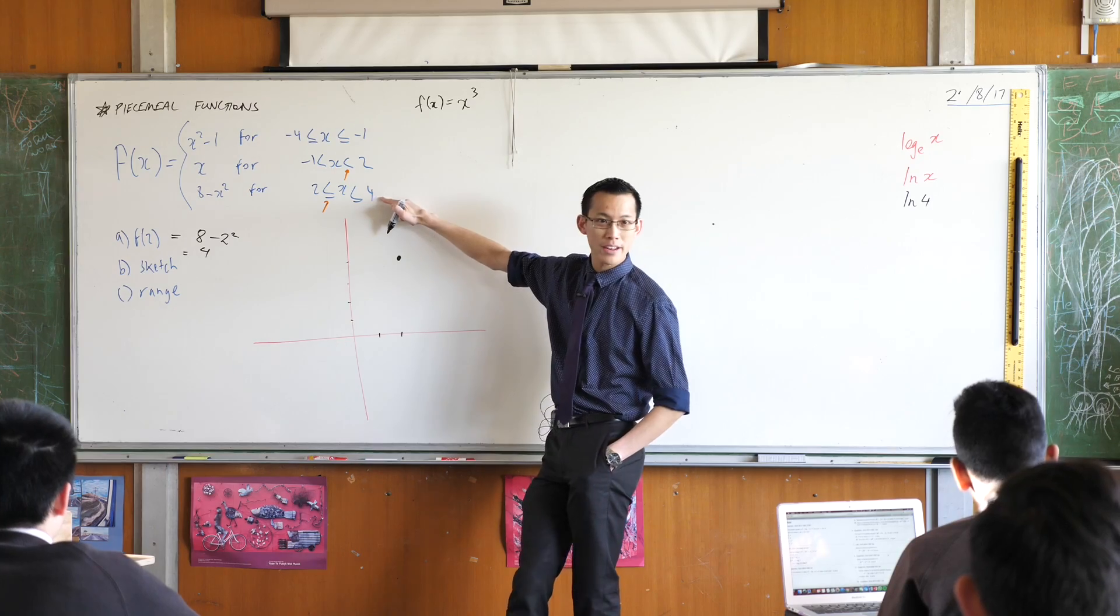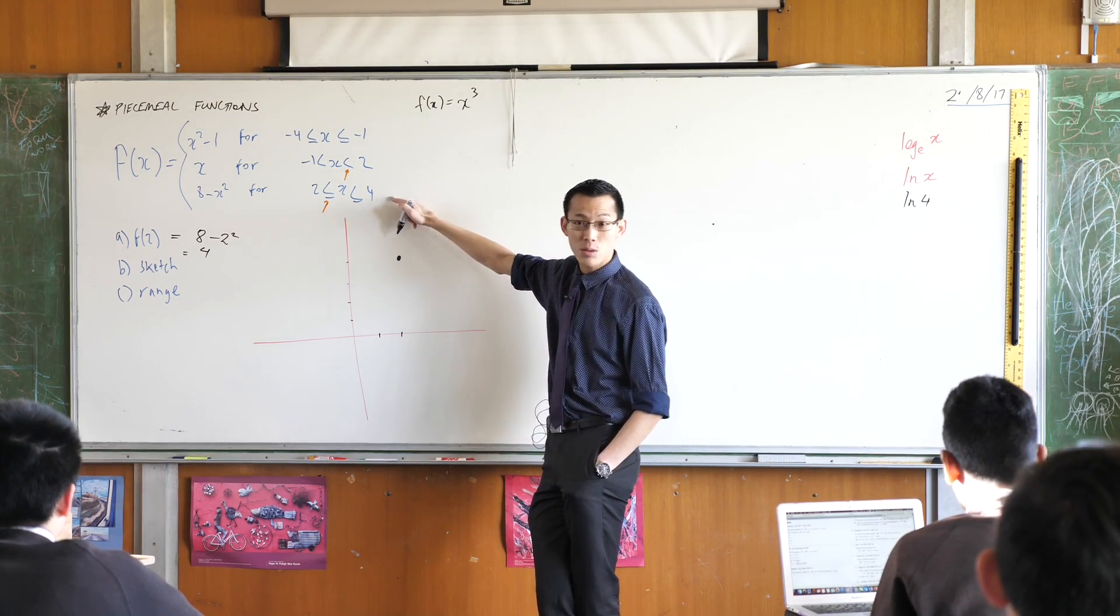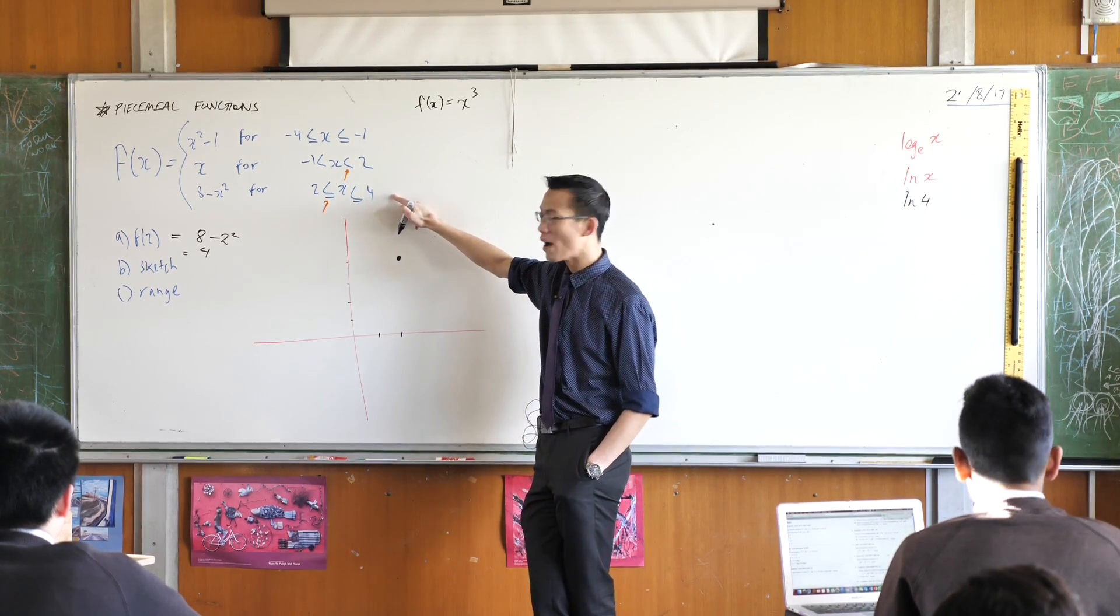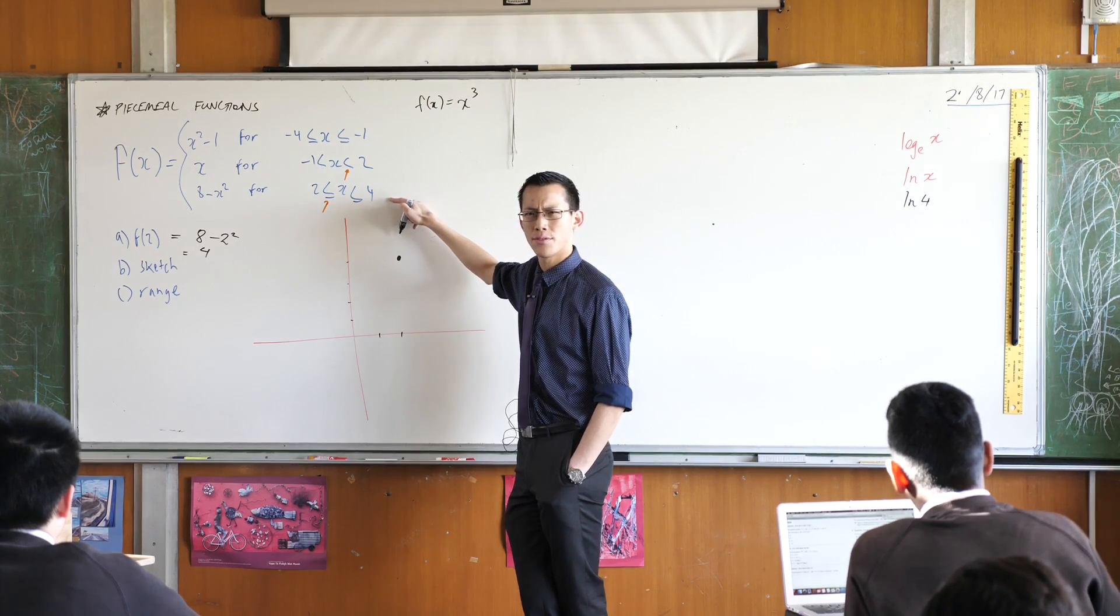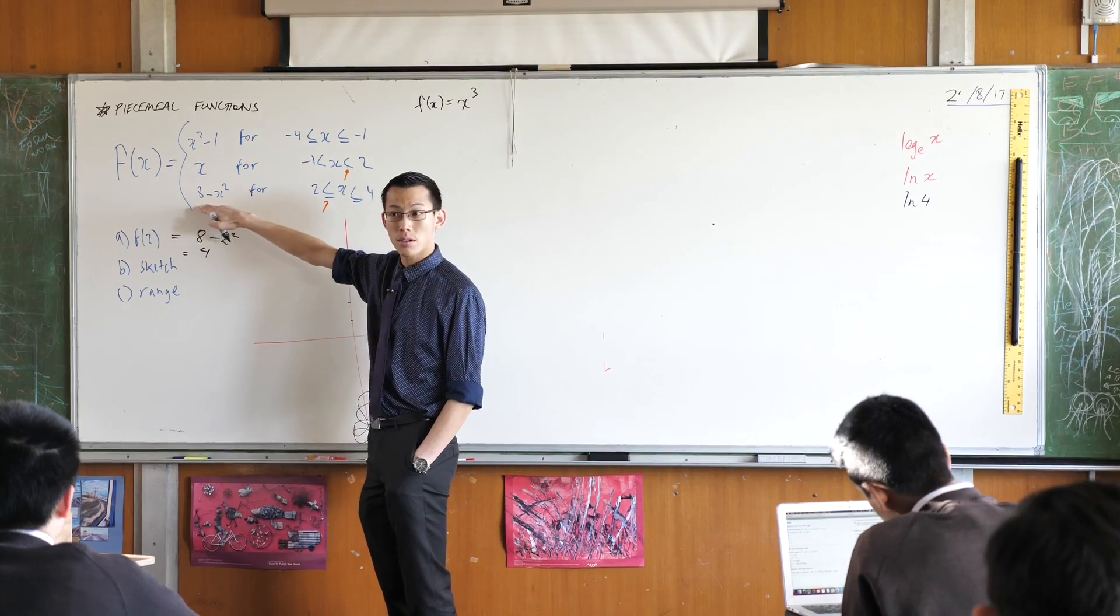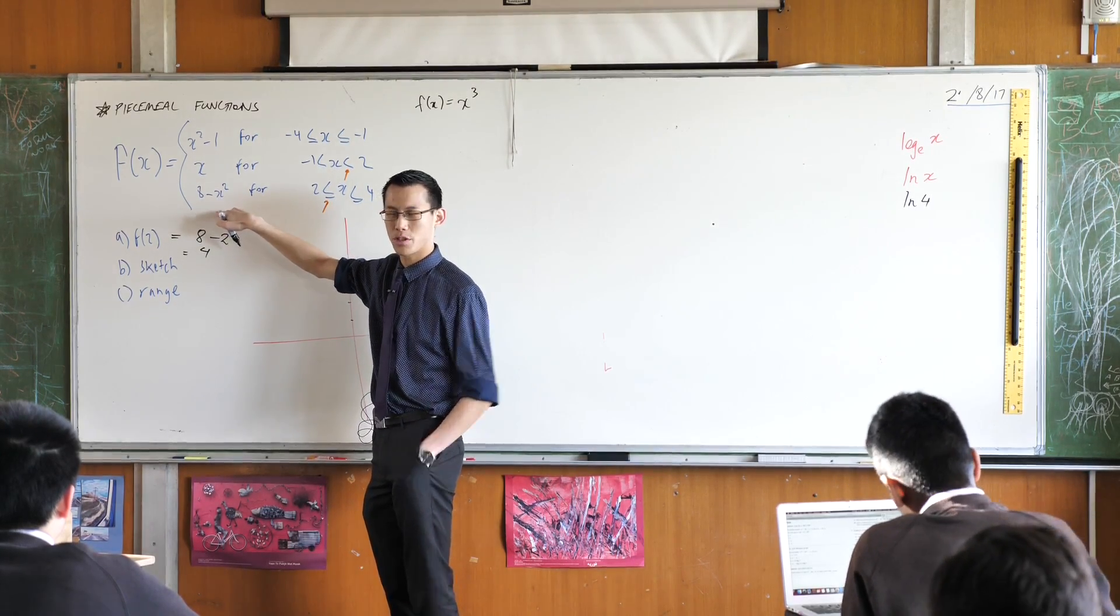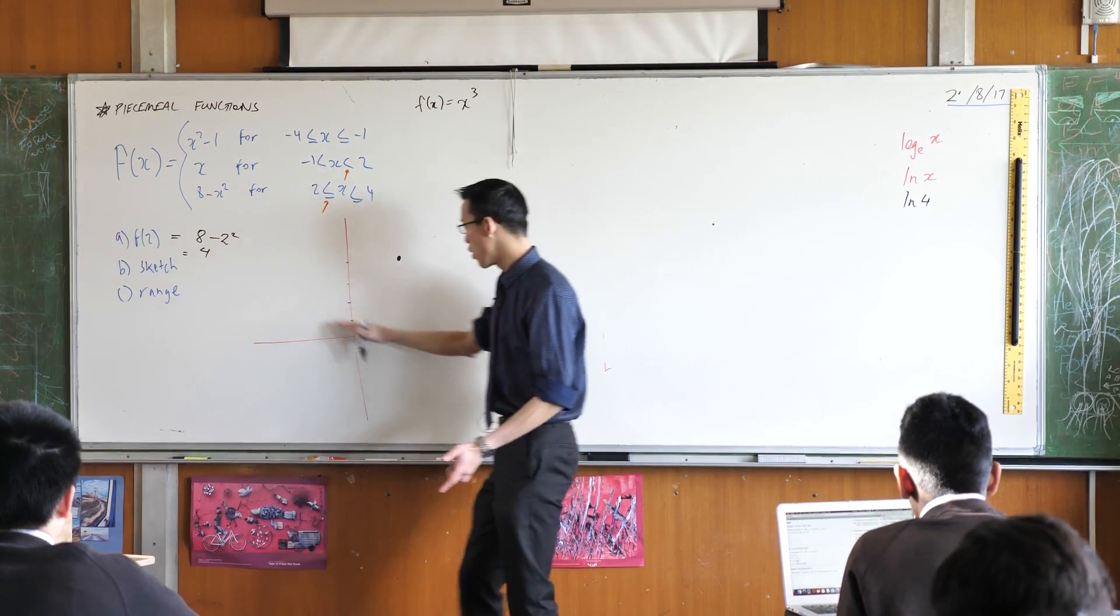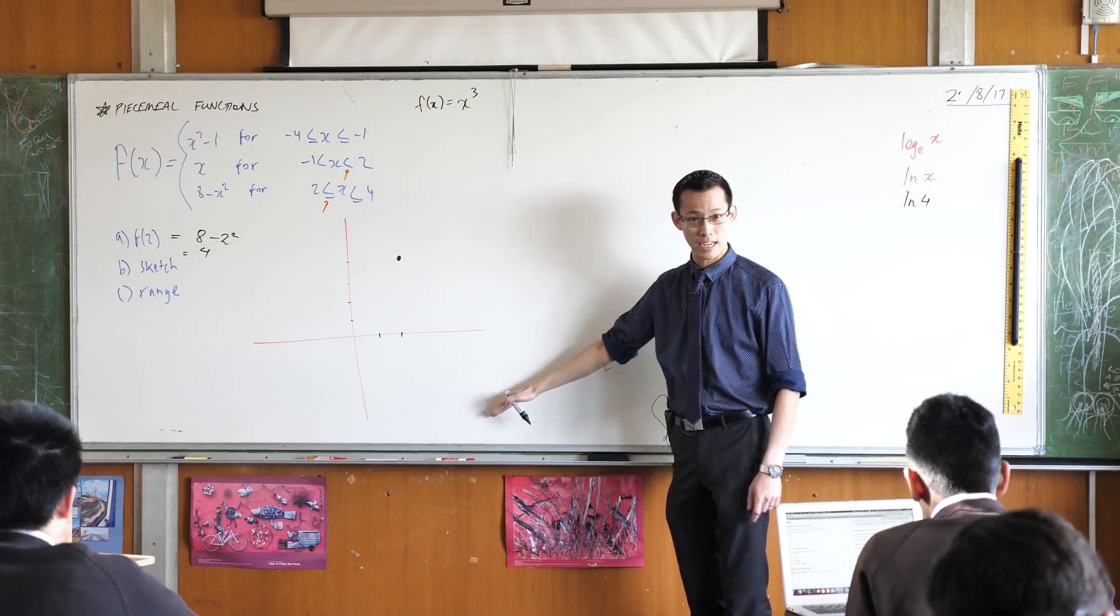So now I don't want to know where does this end? When x is equal to 4, what will f of x be equal to? What's f of 4? Have a look. It'll be 8 minus 4 squared. 8 minus 4 squared, which is 8 take away 16. So it's going to be all the way down here at negative 8. Does that make sense?